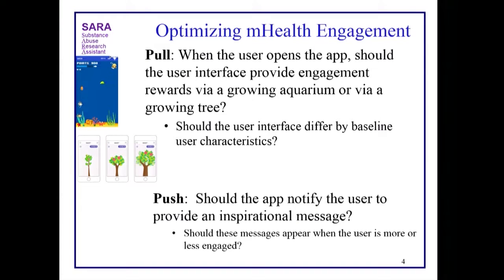There's another type of push and pull — engagement. We not only have therapeutic pulls and therapeutic pushes, we also want to think about intervention engagement. SARA is a research assessment tool for kids at high risk for substance use and drinking. We want to provide engagement whenever they open the app. Should we show rewards by growing an aquarium — with different kinds of fish that you can level up? Or should we use something more sedate, like a tree that grows and produces fruit? And should that vary by the individual?